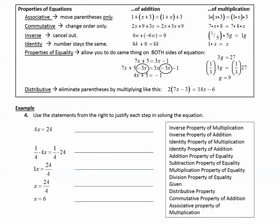Finally, properties of equations. Properties of equations, like the associative property, will move the parentheses only. Like this, the 1, the x, and the 3 stay in the same place, but the parentheses that were around the x plus 3 are now around the 1 plus x. That's of addition. Multiplication works the same way. It's just using multiplication symbols instead of addition symbols. Commutative is when we change the order only. So see how the 2x and the 9 were first, and now the 2x and the 9 are in different places. The 9 changed place with the 3x. They switched. Change the order is commutative.